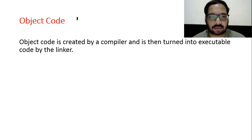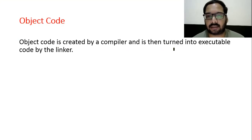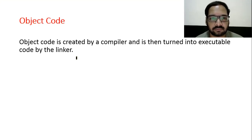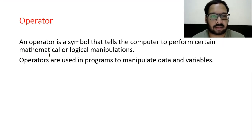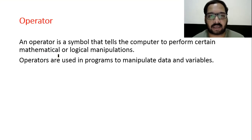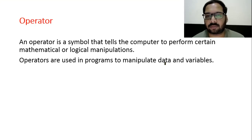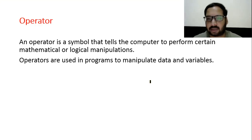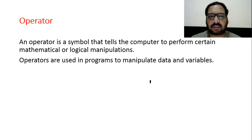Object code: whenever we compile a program, object code is created by the compiler and is then turned into executable code by the linker. Operator: an operator is a symbol that tells the computer to perform certain mathematical or logical manipulations. Operators are used in programs to manipulate data and variables. For example: plus, minus, multiply, less than, greater than, equals to — all these are operators.